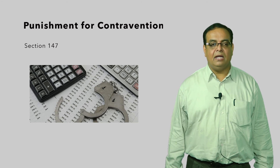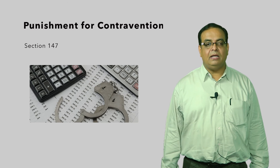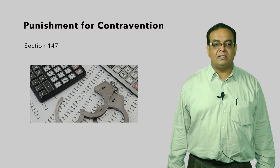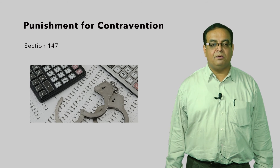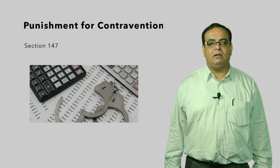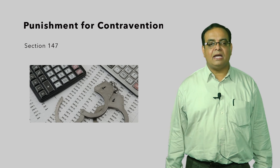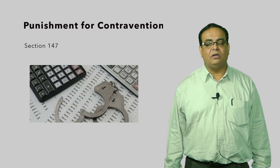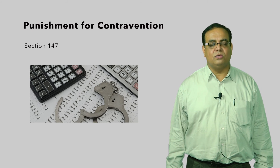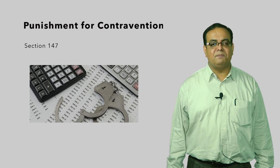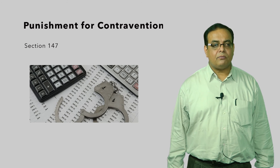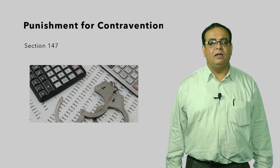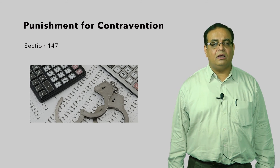Section 147 further states that if an auditor contravenes any of the provisions of sections 139, 143, 144, or 145, the auditor shall be punishable with a fine of not less than 25,000 rupees but which may extend to 5 lakh rupees. One interesting difference between the Companies Act 1956 and the new Companies Act 2013 is that the severity and amount of punishment has increased, which is likely to curtail wrong practices by both the company and the auditor.